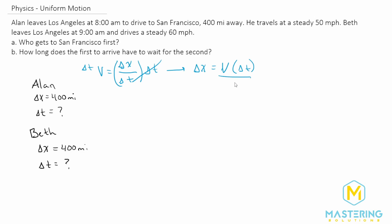We want to isolate time. So we'll divide both sides by velocity now. And that gives us delta T is equal to the change in position or delta X over the velocity.